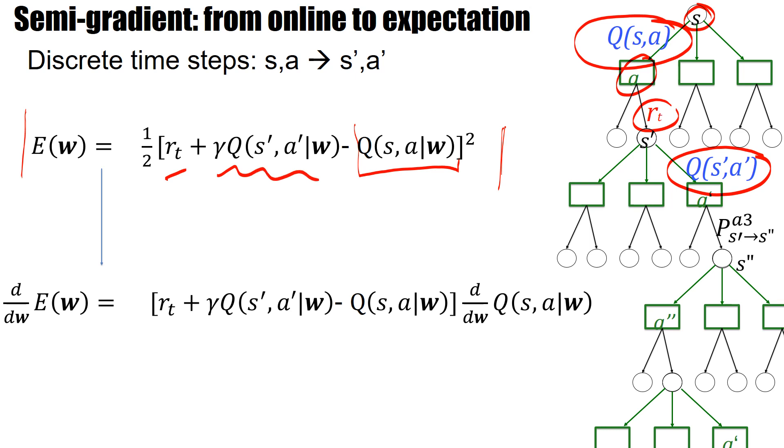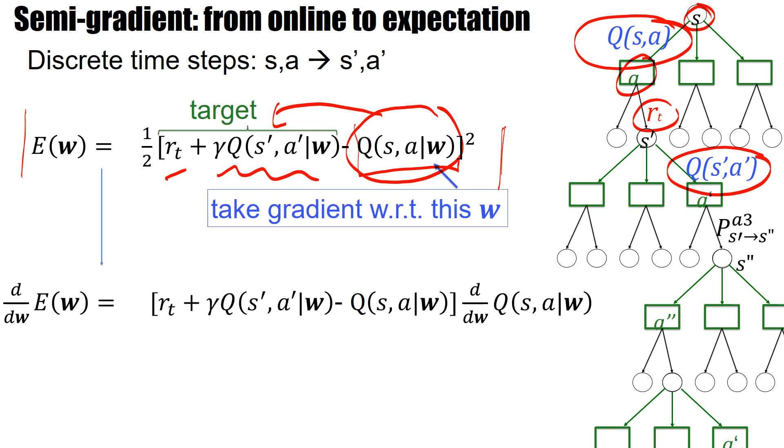Now what we want is that this Q value up here becomes close to the target Q value. So we consider this as a target that's fixed, and we take the gradient with respect to the weights in the term Q(s,a) given w, so as to make the Q values consistent, the consistency condition that's in expectation expressed by the Bellman equation. And if you do this, then we find that in the first term we have the TD error, and then we have the derivative of the Q value, Q(s,a).